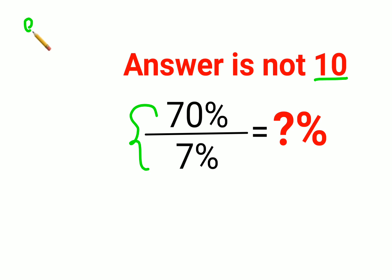Now please understand when you have a percent sign in front of a number, you can convert that number by dividing it by 100. So basically you have 70 upon 100 divided by 7 upon 100.